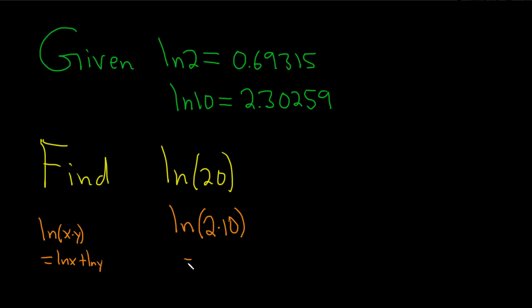So here we get the natural log of 2 plus the natural log of 10. That's called the product rule. The motivation to do it this way is you want to involve the 2 and the 10. So you start by factoring the 20, and then you use the product rule.